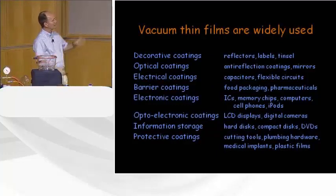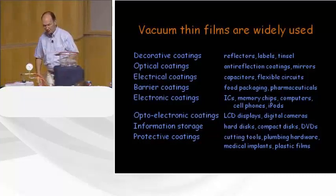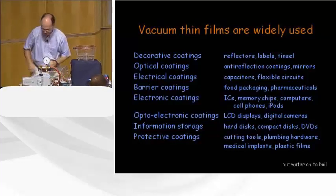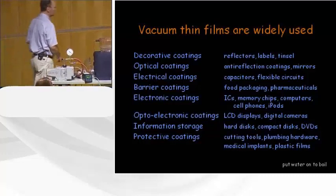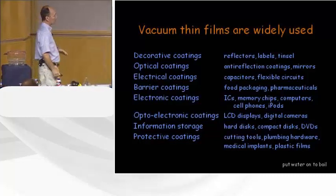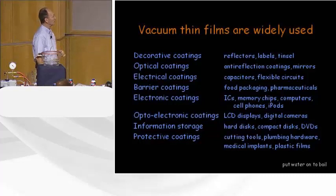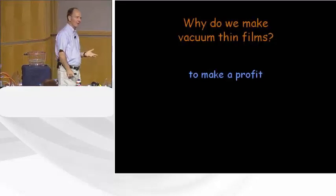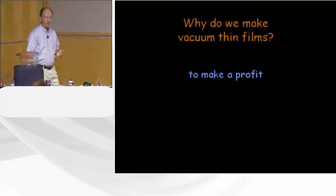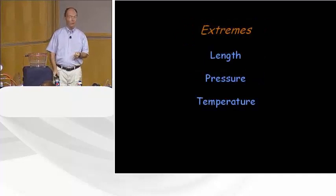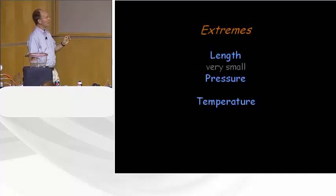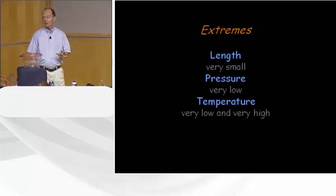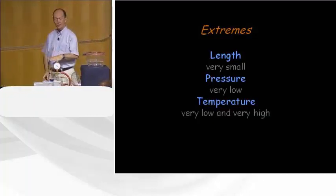Here are some types of coatings on the left and applications on the right — lots of applications for vacuum thin films; they're actually quite ubiquitous. Why do we make vacuum thin films in the first place? To make a profit. The next section is going to talk about extremes: extremes in length going very small, extremes in pressure going very low, and extremes in temperature — both very high and very low for very different purposes.